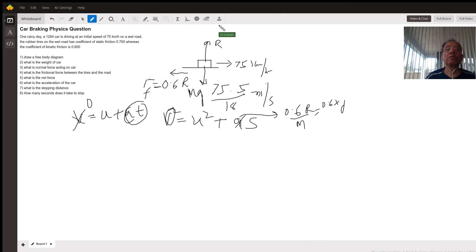This is a question on free body diagrams. There's a car moving to the right at a speed of 75 kilometers per hour. To convert it into meters per second, multiply 75 by 5 and divide by 18.